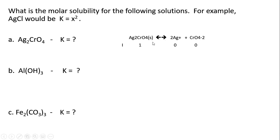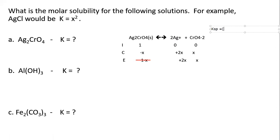Since silver chromate is a solid, initially we set it to 1 and the products to 0. The change is −x for the reactant, +2x for Ag⁺, and +x for chromate. At equilibrium we get those values, and since silver chromate is a solid we disregard it in the equilibrium expression. The Ksp equals [Ag⁺]² × [CrO₄²⁻]. Plugging in equilibrium values: Ksp = (2x)² × x = 4x³.